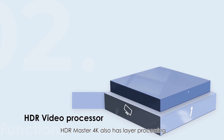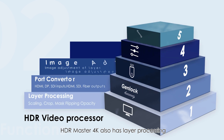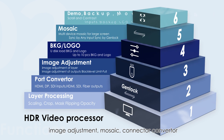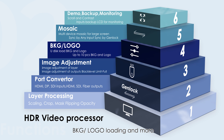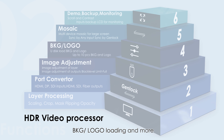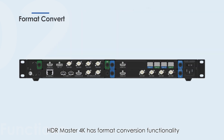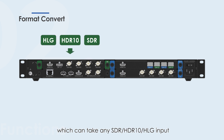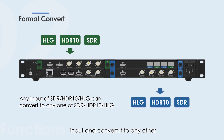HDR Master 4K also has layer processing, image adjustment, mosaic and conversion, BKG or logo loading, and more. HDR Master 4K has format conversion functionality, which can take any SDR, HDR10, or HLG input and convert it to any other SDR, HDR10, or HLG output.